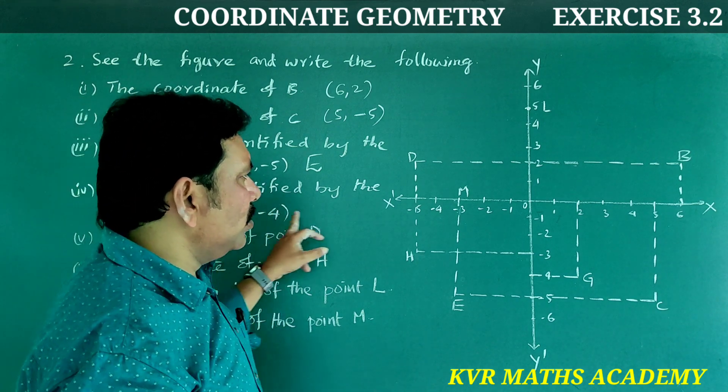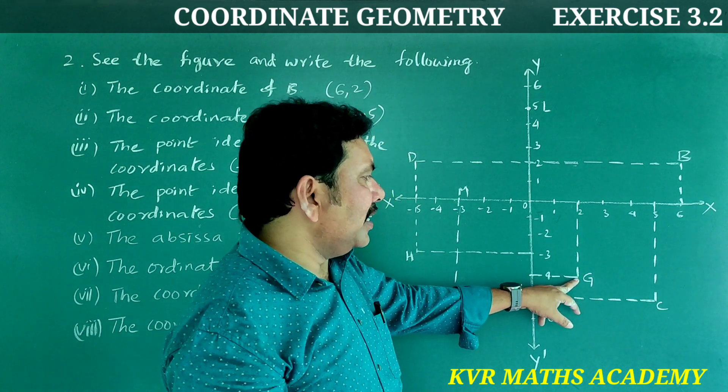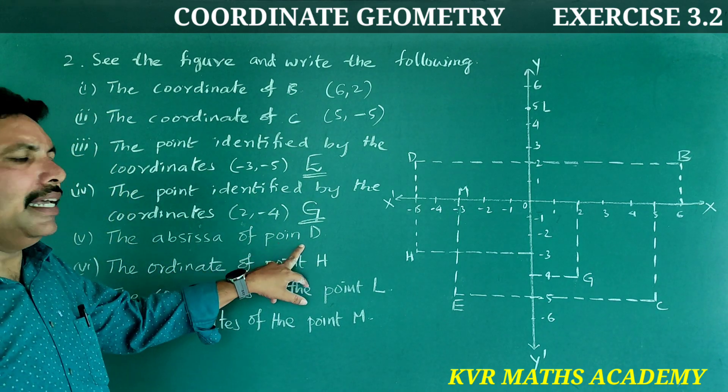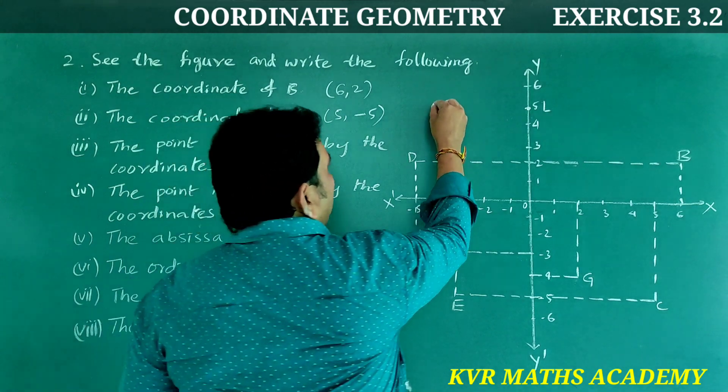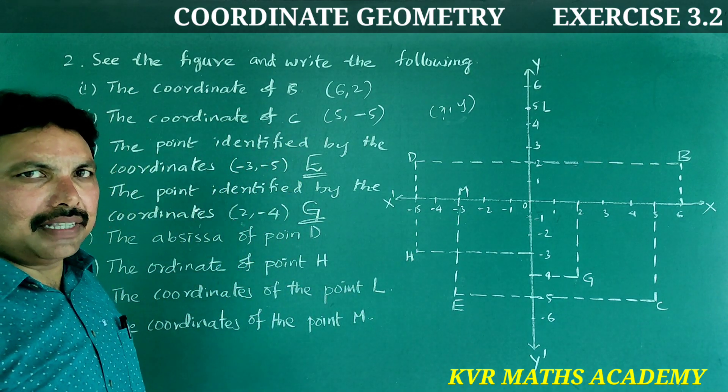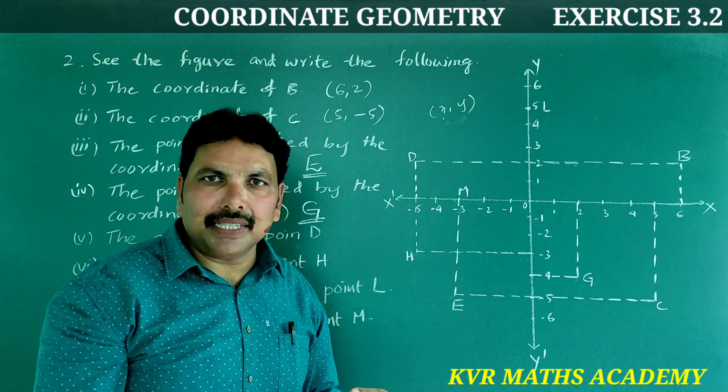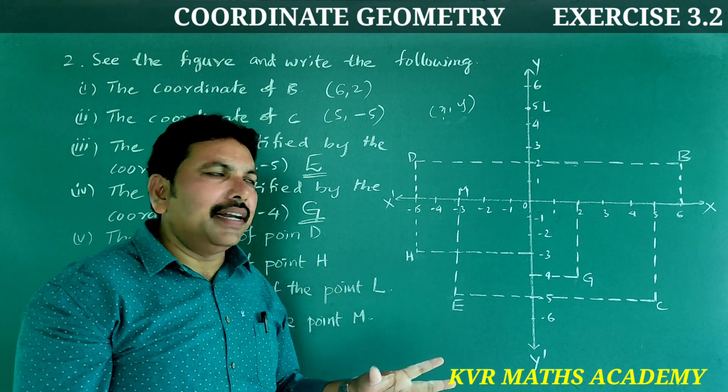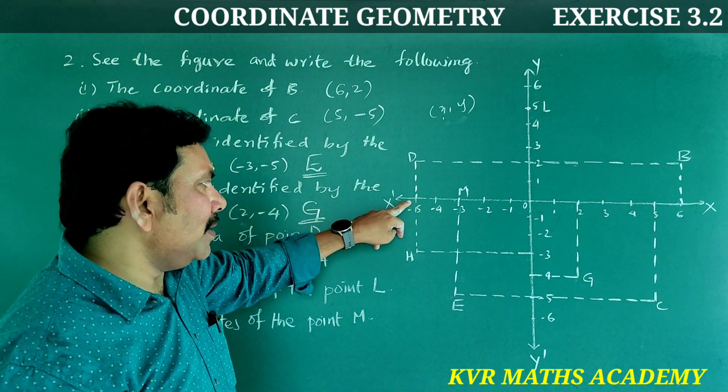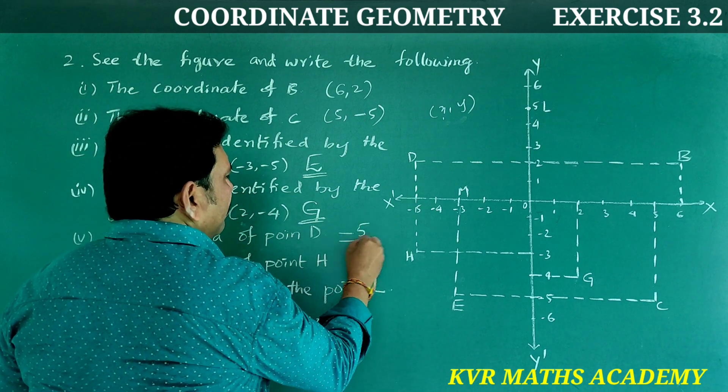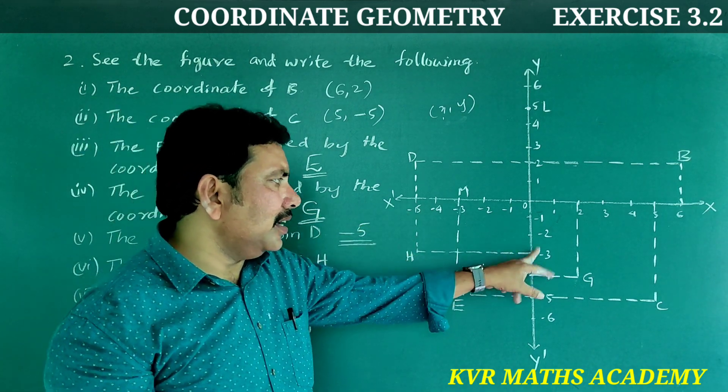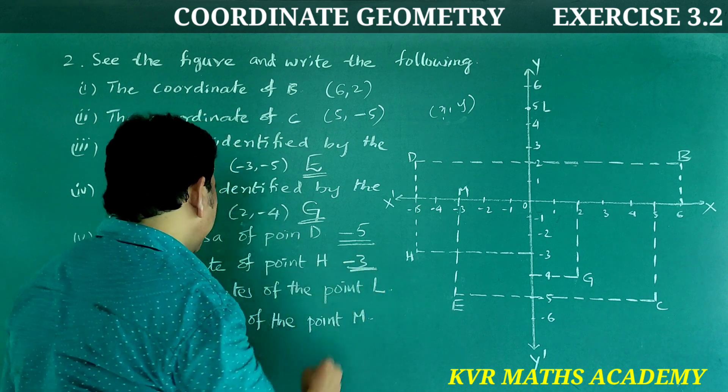Next, the point identified by coordinates (2, -4): x-axis is 2, y-axis is -4, that is G. Right answer. Next, the abscissa of point D. The first coordinate, x-coordinate, is called abscissa; the second coordinate, y-coordinate, is called ordinate. So the abscissa of point D is -5.